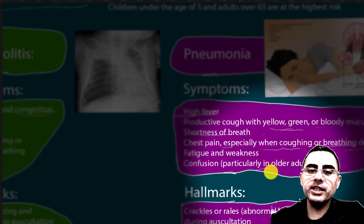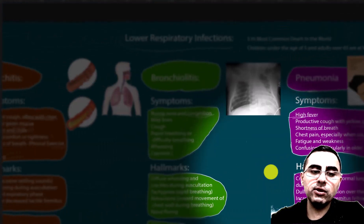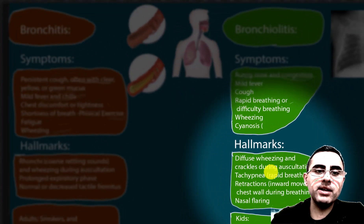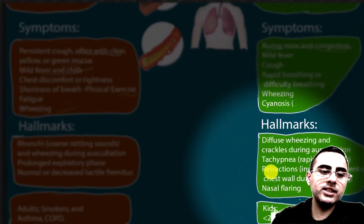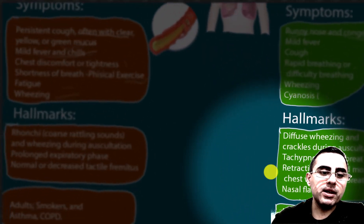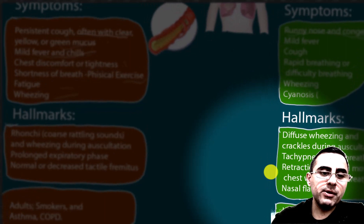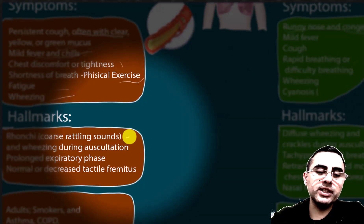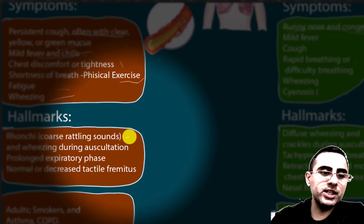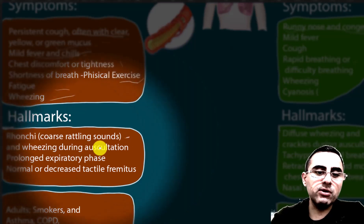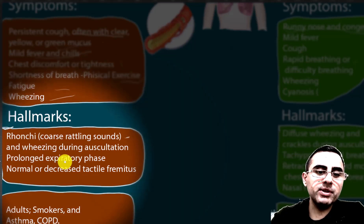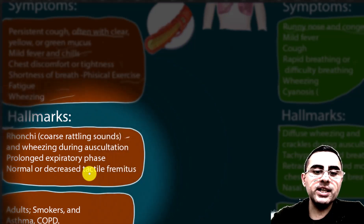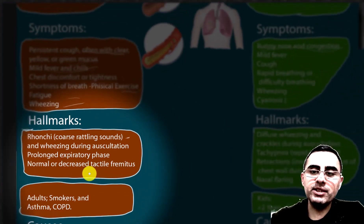A hallmark of bronchitis is bronchial wheezing — a coarse rattling sound during auscultation — and wheezing during auscultation. Prolonged expiratory phase, normal or decreased tactile fremitus are also characteristic.